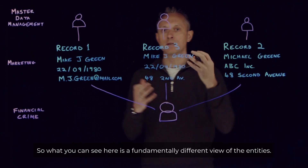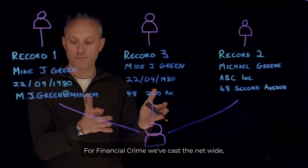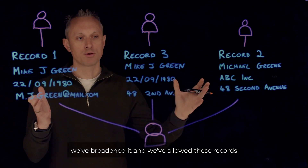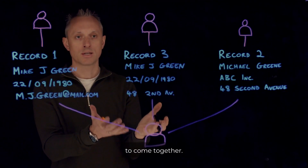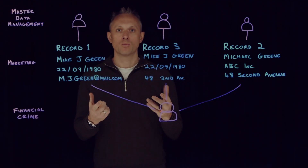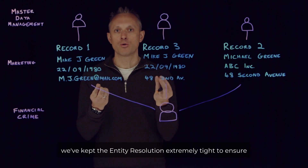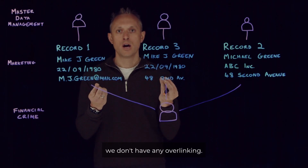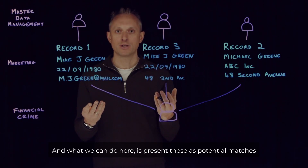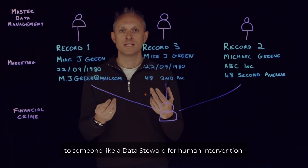What you can see here is a fundamentally different view of the entities. For financial crime, we've cast the net wide and allowed these records to come together. Whereas in master data management, we've kept the entity resolution extremely tight to ensure we don't have any overlinking. And what we can do here is present these as potential matches to someone like a data steward for human intervention.